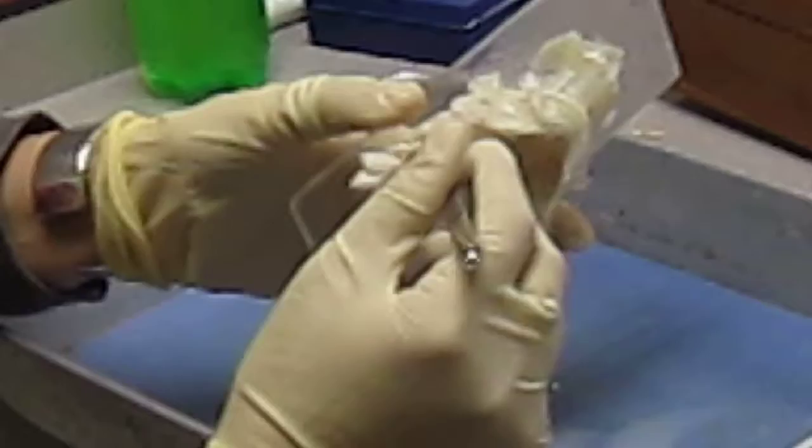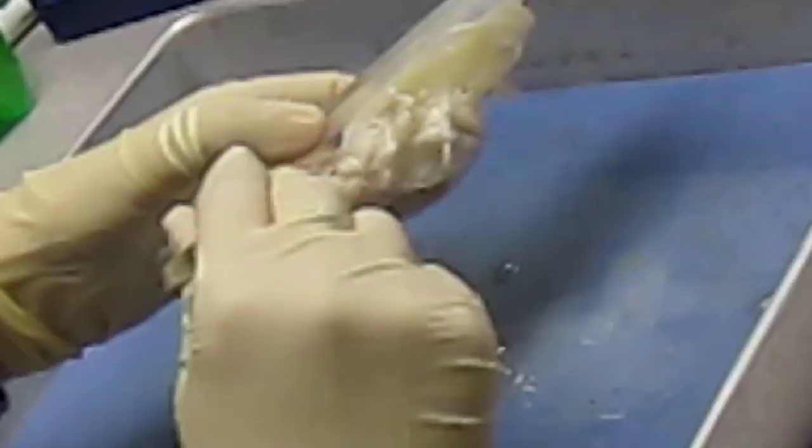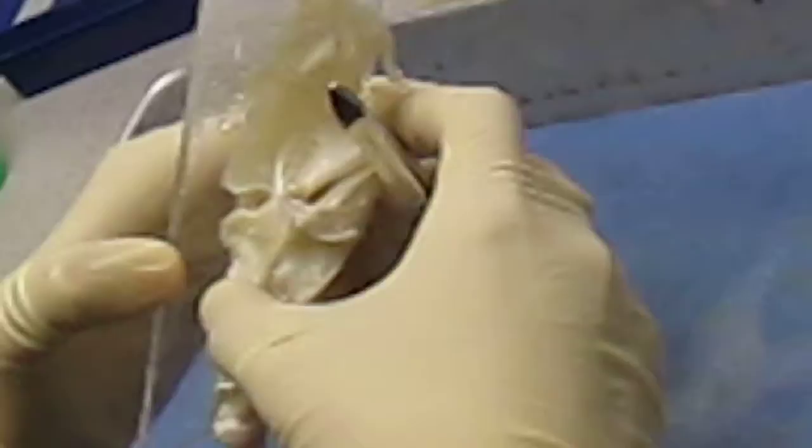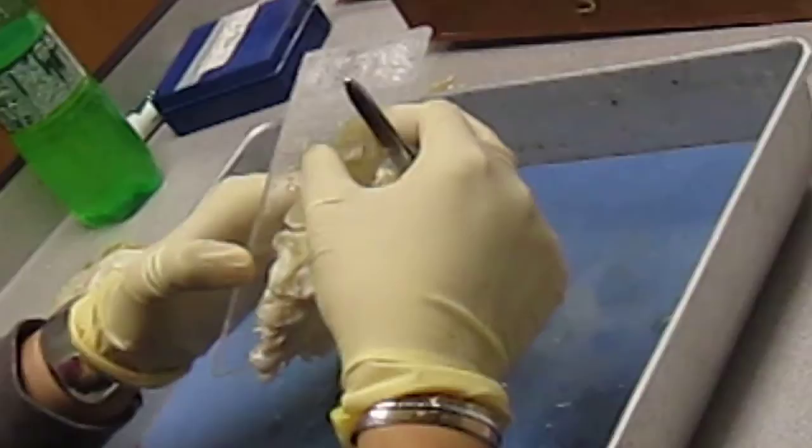And then on top, up here, you have epibranchials. So you have your ceratobranchials on the bottom and your epibranchials on the top. And then this whole part right here that I'm wiggling, that's the visceral skeleton. This part is the chondrocranium.